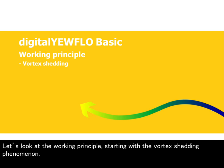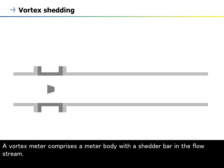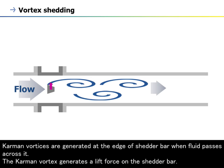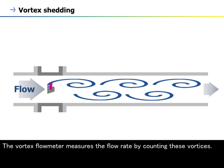Let's look at the working principle, starting with the vortex shedding phenomenon. A vortex meter comprises a meter body with a shedder bar in the flow stream. Karman vortices are generated at the edge of shedder bar when fluid passes across it. The Karman vortex generates a lift force on the shedder bar. The vortex flow meter measures the flow rate by counting these vortices.